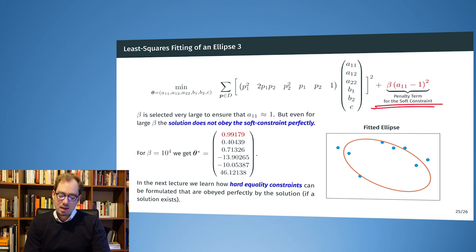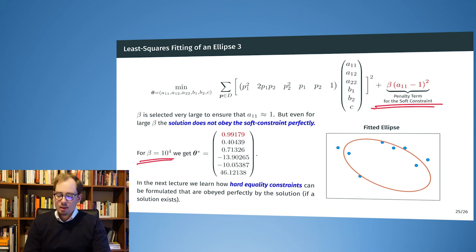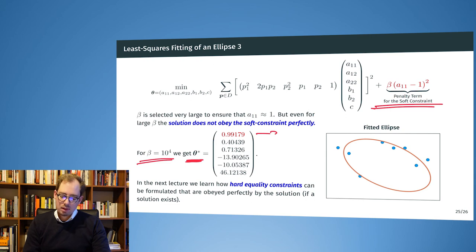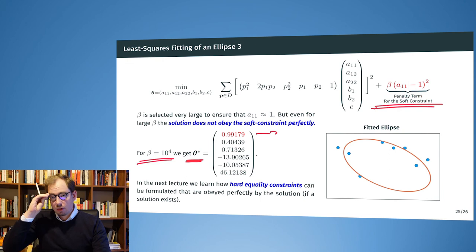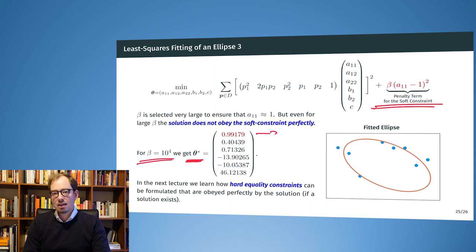We choose beta very large — 10,000. When we solve the optimization problem with a Newton method or gradient descent, we converge to a solution theta-star where the entry A11 is pretty close to one, but not exactly one. With soft constraints we are approaching the constraint but do not exactly reach it, which means we have introduced some bias — exactly as mentioned earlier.